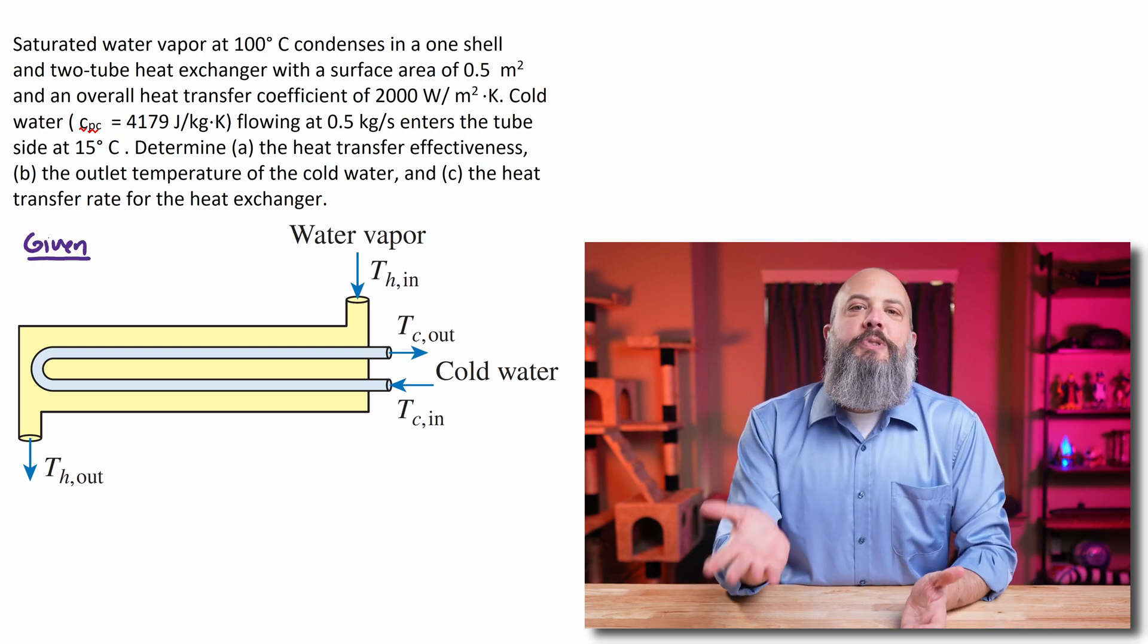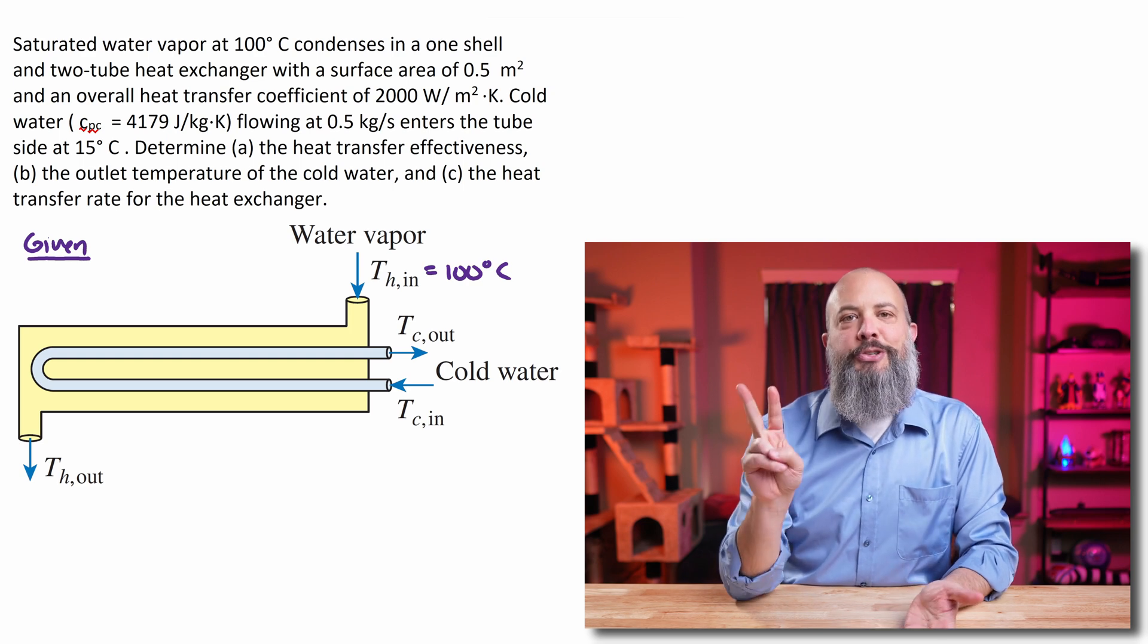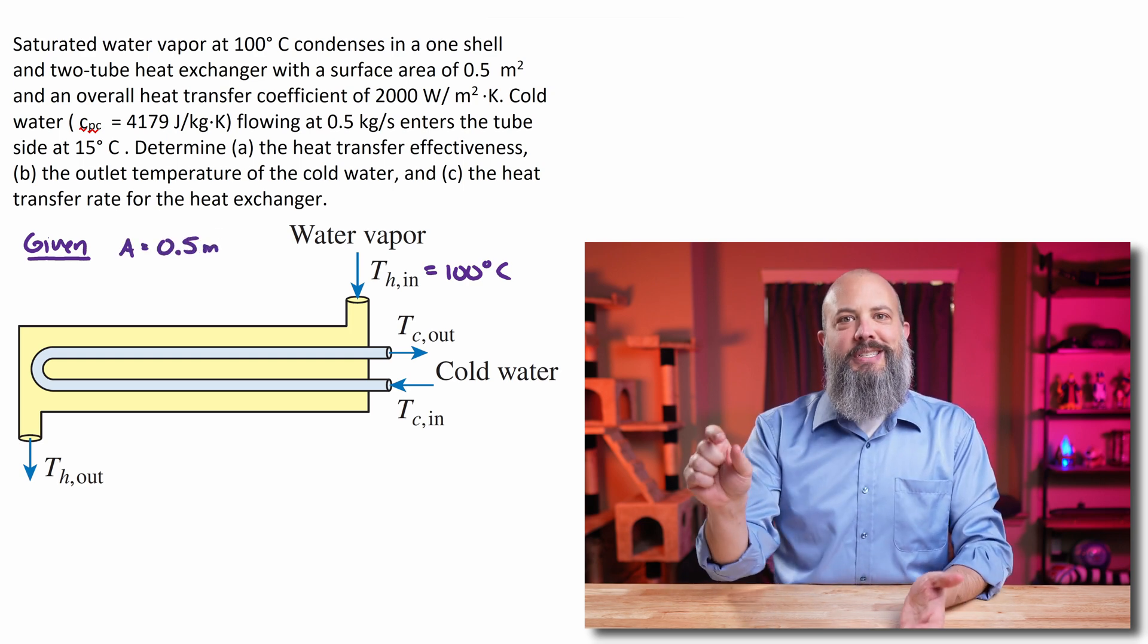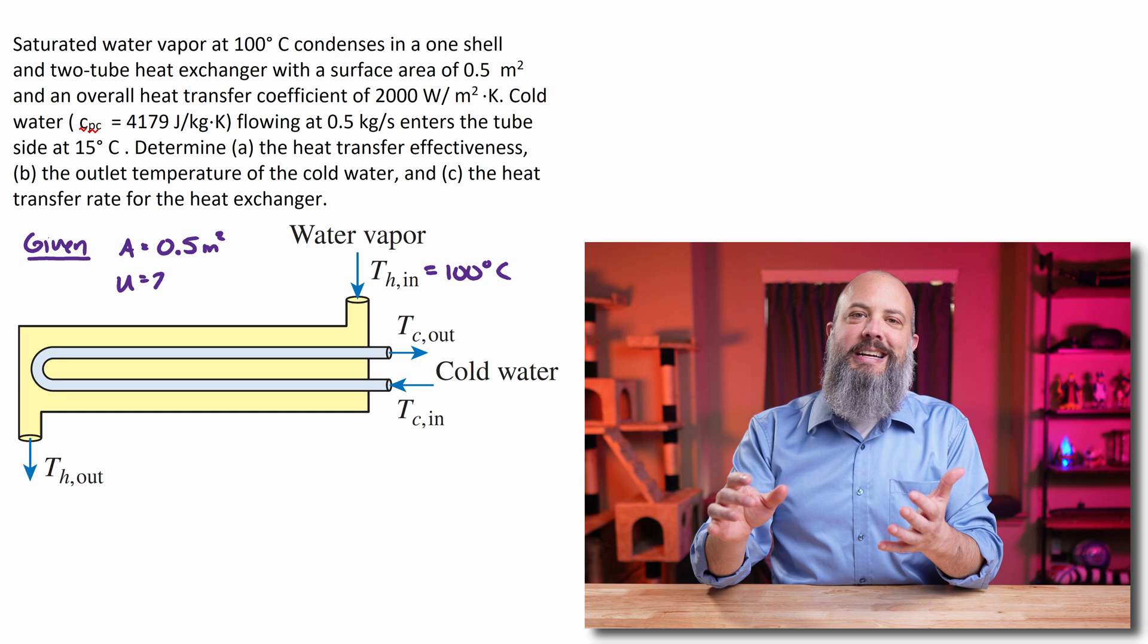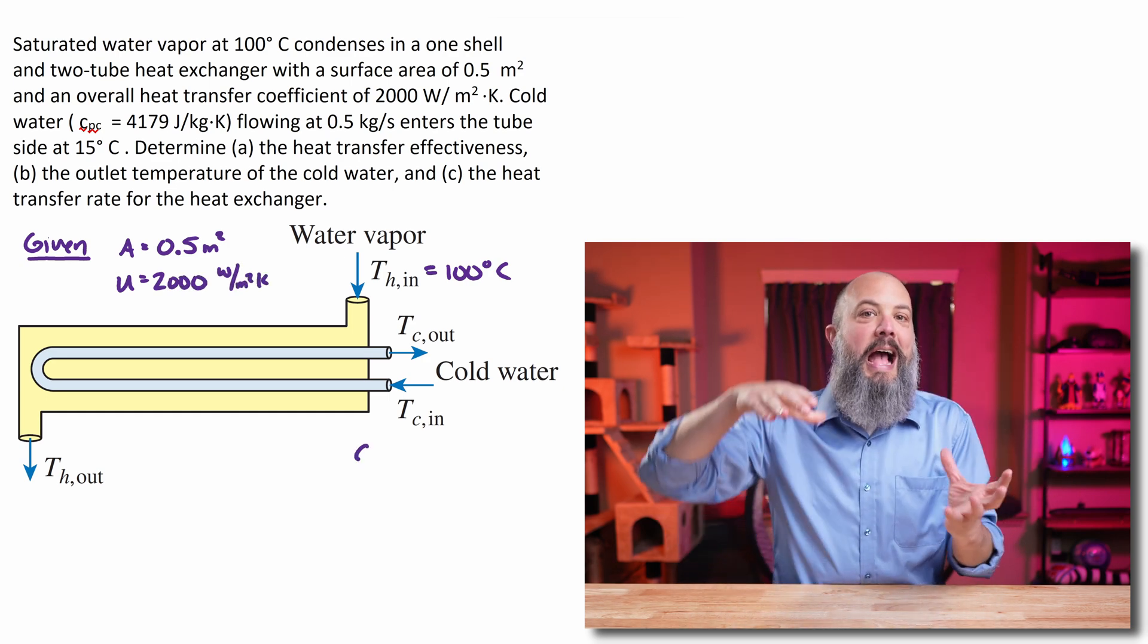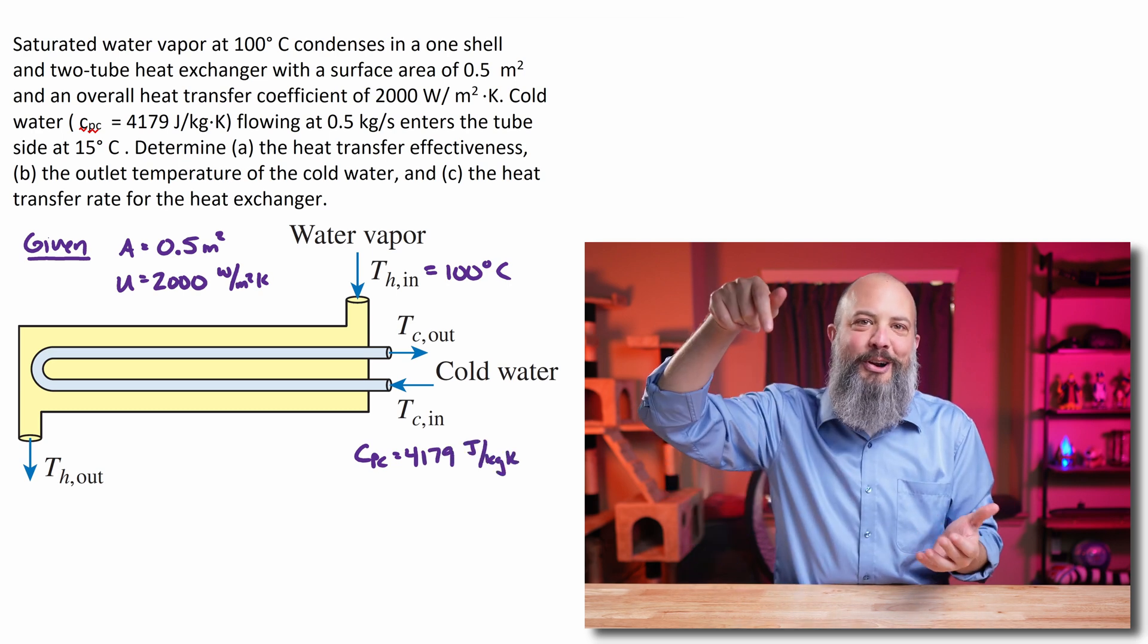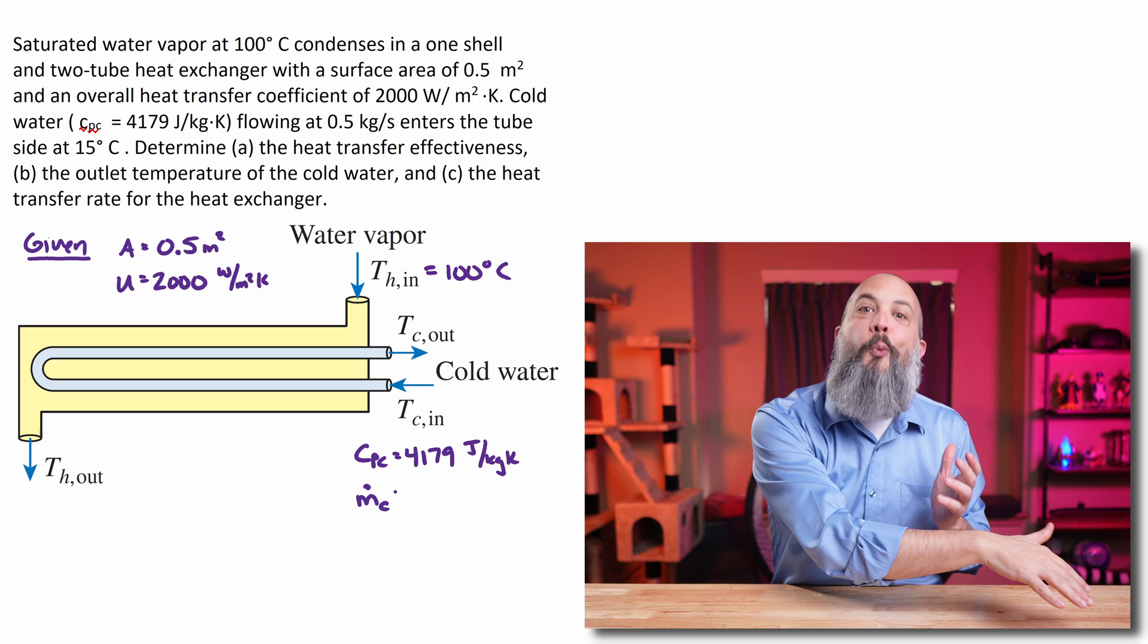This is a shell and tube style heat exchanger with one shell pass and two tube passes. This means that the cold water inlet snakes in and out twice, but the outer shell, the water vapor, just flows through one time.